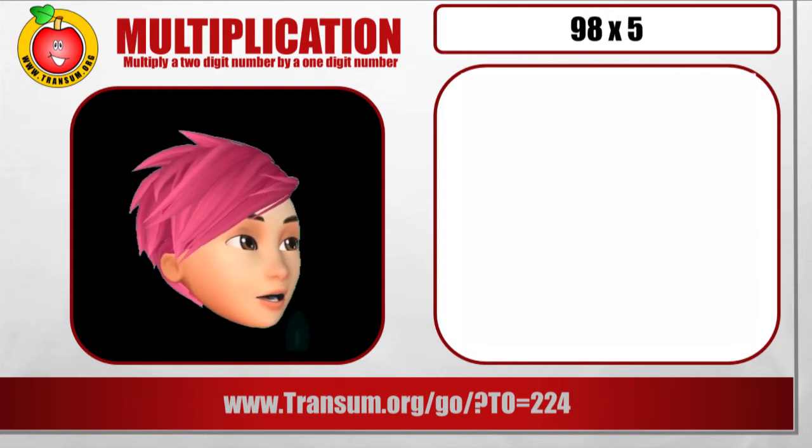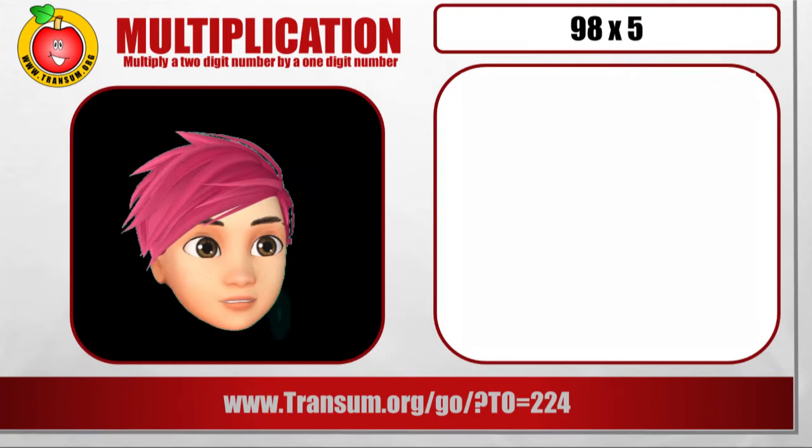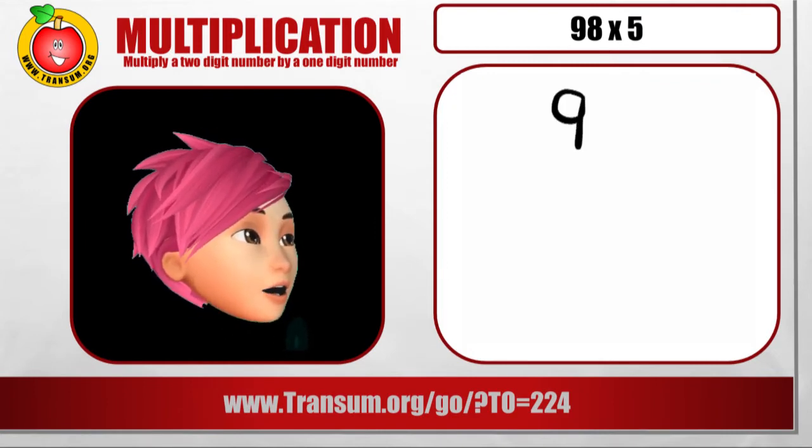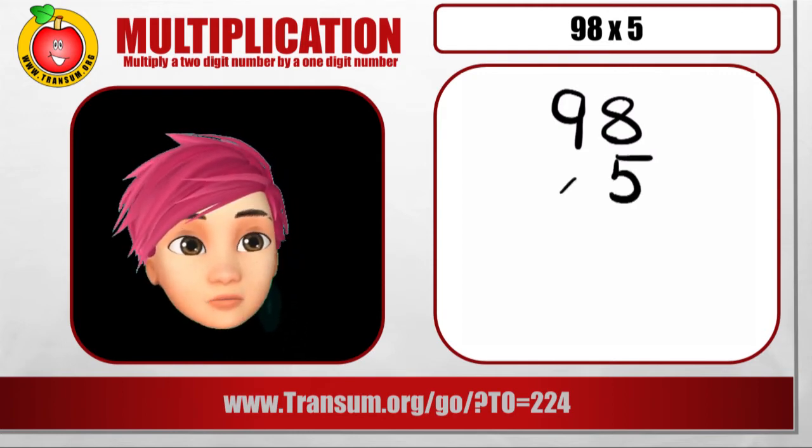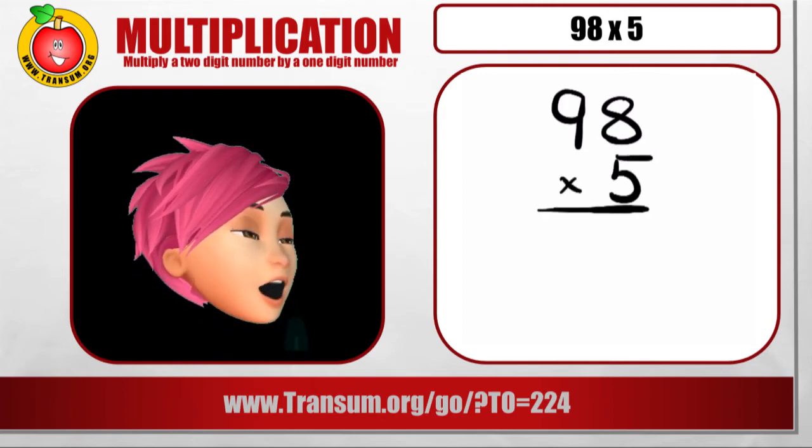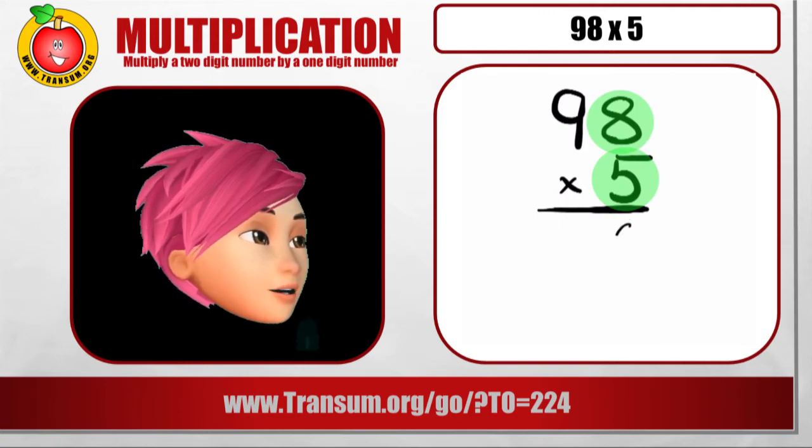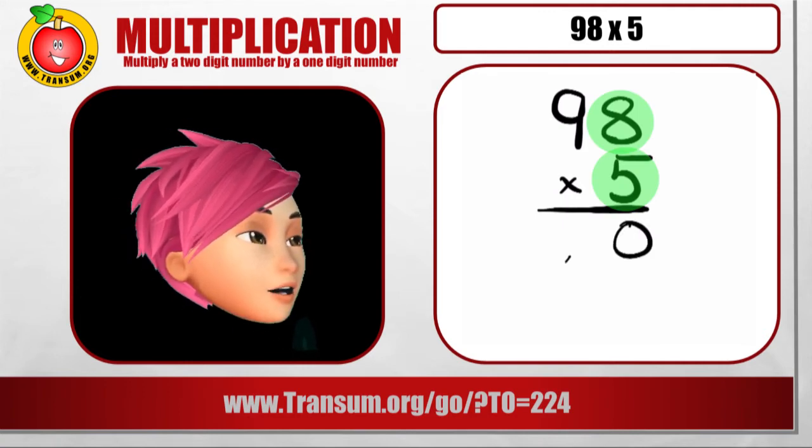Next example. 98 times 5. Okay, write down the 98 and the 5 underneath. Multiplication sign in the normal place. Then multiply the ones. 5 by 8 is 40.